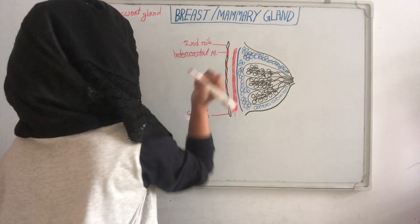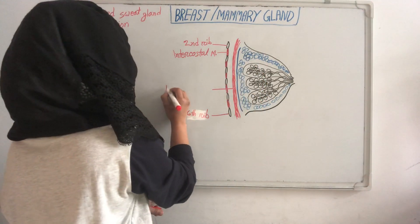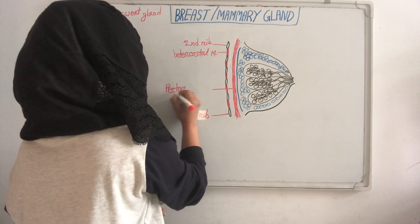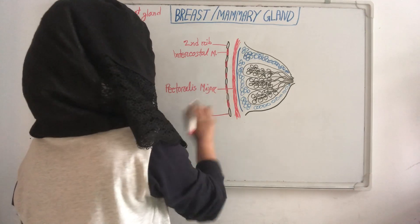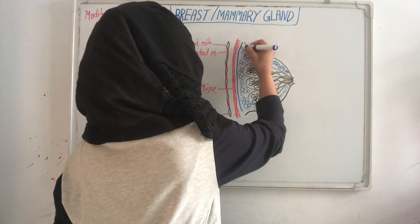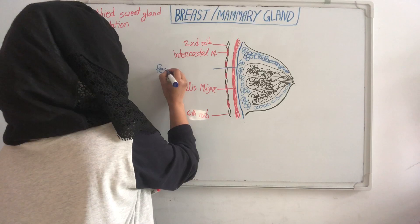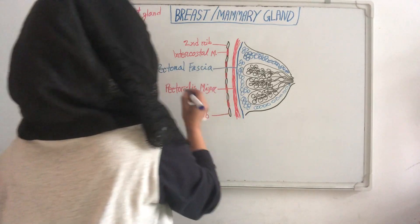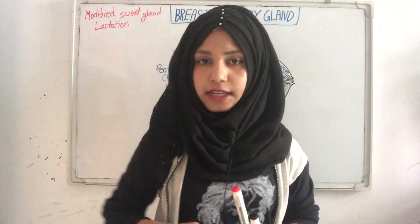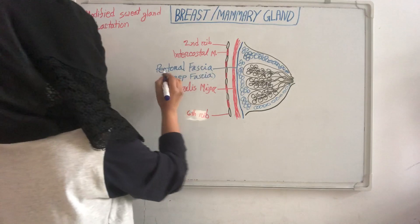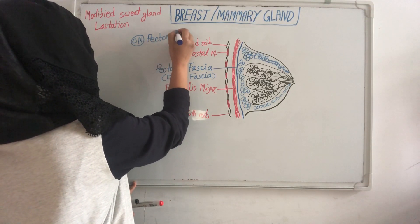This muscle is the pectoralis major muscle. And this below one is the pectoral fascia or deep fascia. The mammary gland is present on the pectoral or deep fascia.